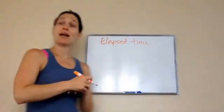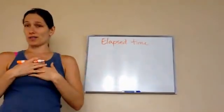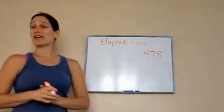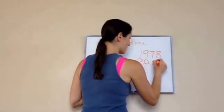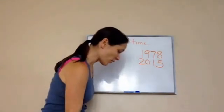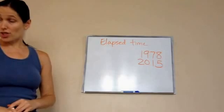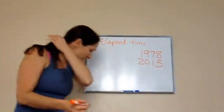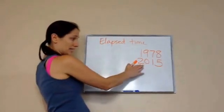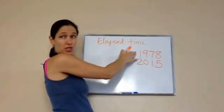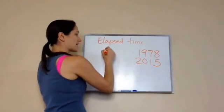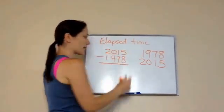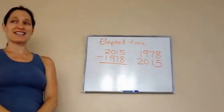For example, tell me how much time has happened since I was born. I was born in 1978 — long time ago. What year is it right now? 2015. So whenever you're taking elapsed time, you want to take the larger number, which is 2015 — that's the latest time — minus the earlier time, 1978. Later date minus earlier date, or the bigger minus the smaller number.